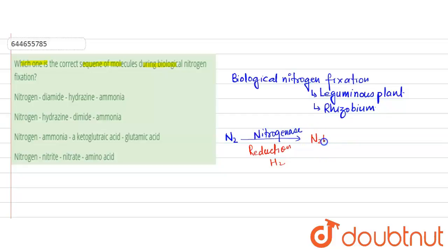Then diamide undergoes reduction to form a compound called hydrazine with the formula N2H4.